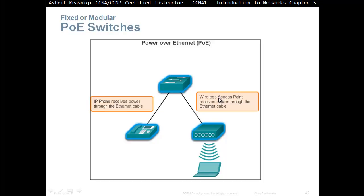PoE switches — Power over Ethernet — is the capability of switches to provide power through the Ethernet port. It's a big improvement because we can provide power for IP phones, access points, and so on. Think of it like a USB port that gives power to charge your mobile phone. Similarly, switches can deliver power through the copper port, so you don't have to buy external power supplies for IP phones and other devices.